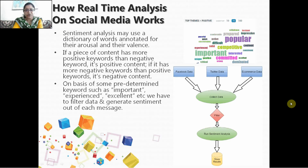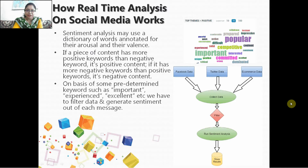For implementing this, first we need to create a data dictionary with keywords — like here you can see there are words like popular, difficult, solid, competitive. On the basis of these keywords, we can analyze whether a piece of content is positive or negative. If it has more positive content then it's positive, otherwise it's negative, or if we do not find those keywords it could be neutral.